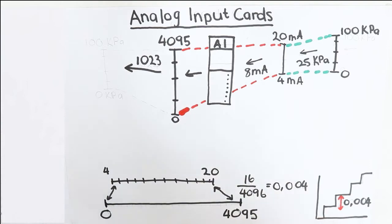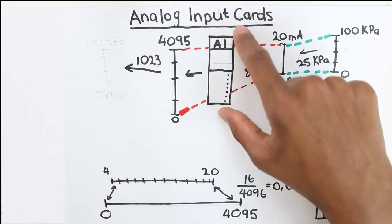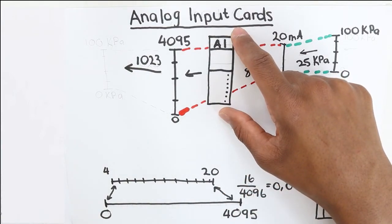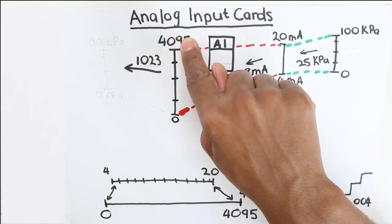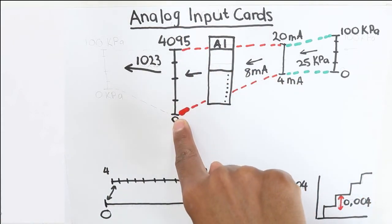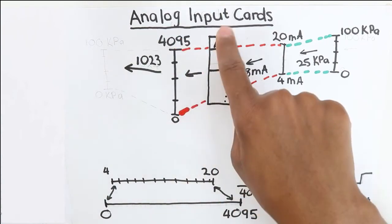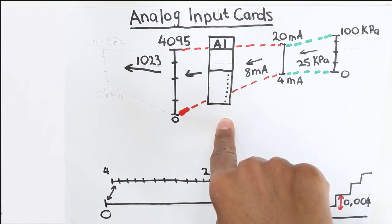If this was confusing to you, don't worry. The important thing to understand is that when the 4 to 20 milliamp signal reaches the analog input card, it is mapped between 0 to 4095 or the values that will be indicated in the manual of the card that you are using for your plant.